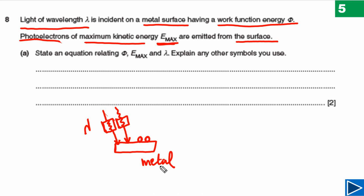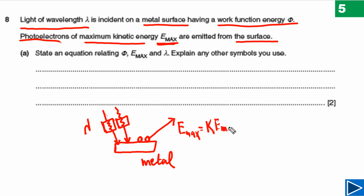One photon will give all of its energy to one electron — this is a one-to-one interaction. As soon as the photon is absorbed by the electron, the electron is released from the atom. The electron uses some of its energy to release itself from the atom, and the remaining energy becomes its kinetic energy. This is the maximum kinetic energy possible for this light and metal — in the question this is called Emax.